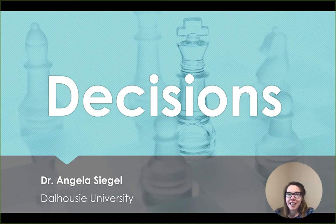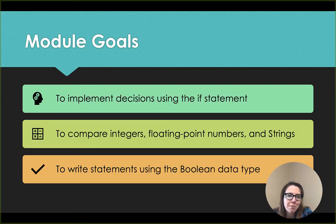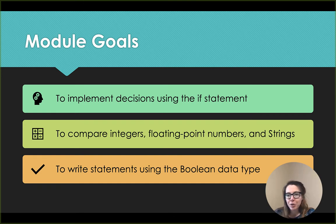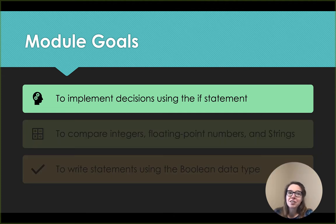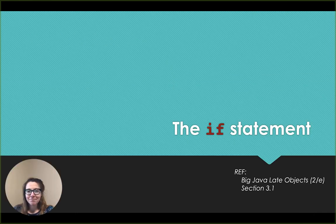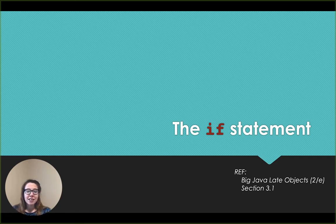Welcome back. I'm Dr. Angela Siegel from Dalhousie University, and today we're going to start covering decisions. The goals of this module will be to implement decisions using the if statement, to compare integers, floating point numbers, and strings, and to write statements using the Boolean data type. If you're following along in our book, Big Java Late Objects, we've started on section 3.1.